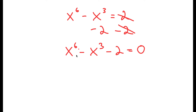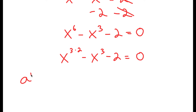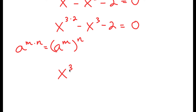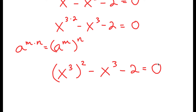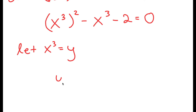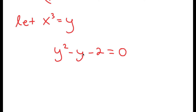From here, I can rewrite x to the power of 6 as x to the power of 3 times 2. Since a to the power of m times n equals a to the power of m to the power of n, x to the power of 3 times 2 equals x to the power of 3 to the power of 2. So now I let x to the power of 3 equal to the variable y, and I get y squared minus y minus 2 equals 0 — a quadratic equation.